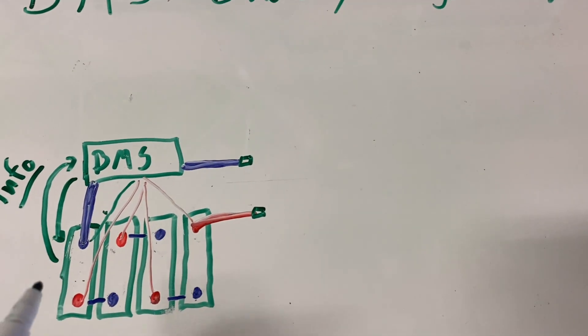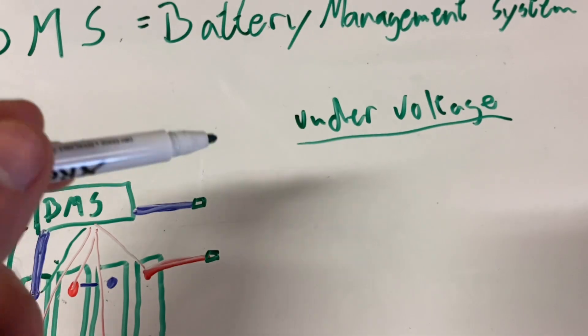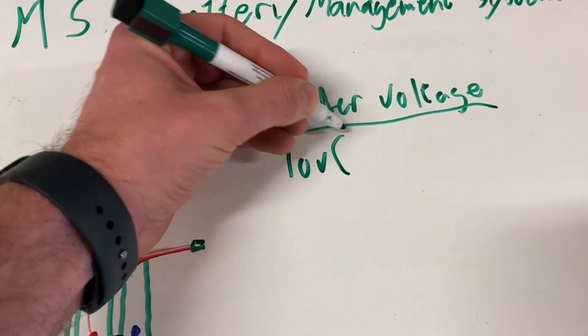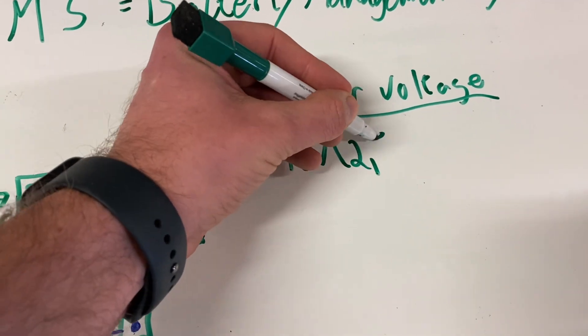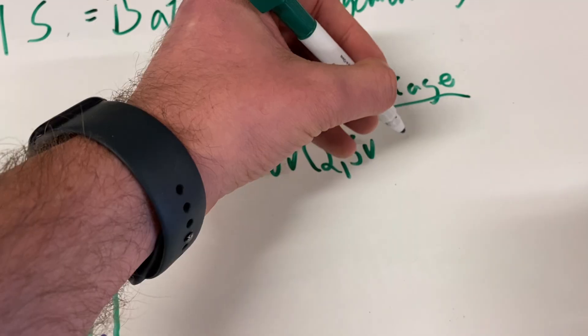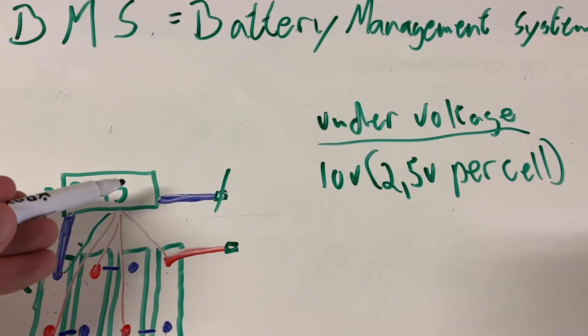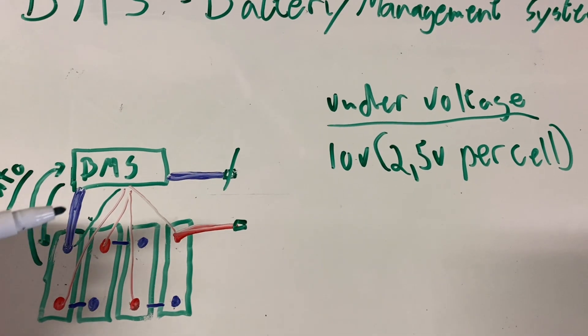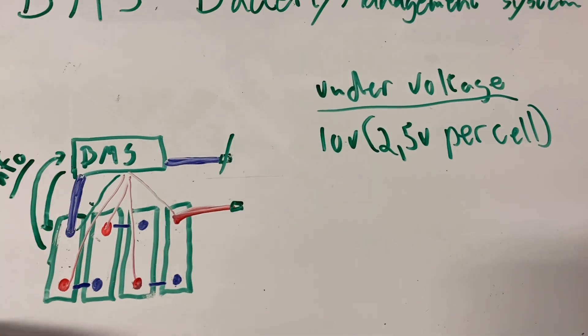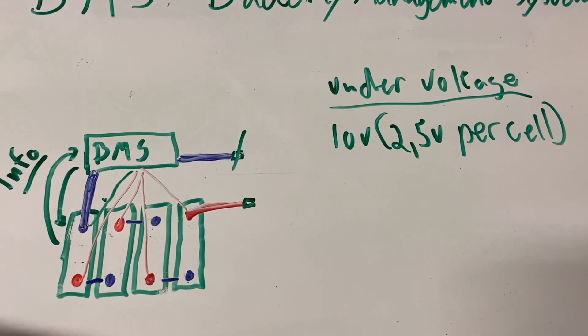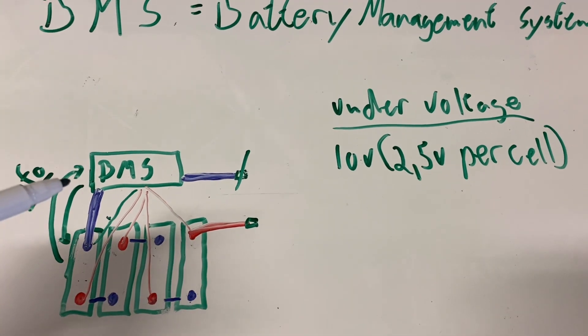Let's talk about its key protections. Under voltage: if the battery gets down to about 10 volts, which is 2.5 volts per cell, the BMS will shut down to protect the cells. Most users just see a dead battery, but the battery just entered something called low voltage lockout.